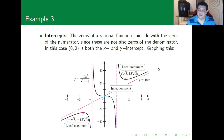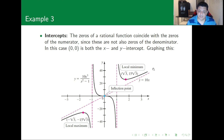The slant asymptote is y = 10x, which is visible on the graph. Remember, whenever the degree of the numerator exceeds the degree of the denominator by exactly one, there is a slant asymptote. We can also see the local maximum and local minimum on the graph; note that they are only local and cannot be considered absolute extrema.